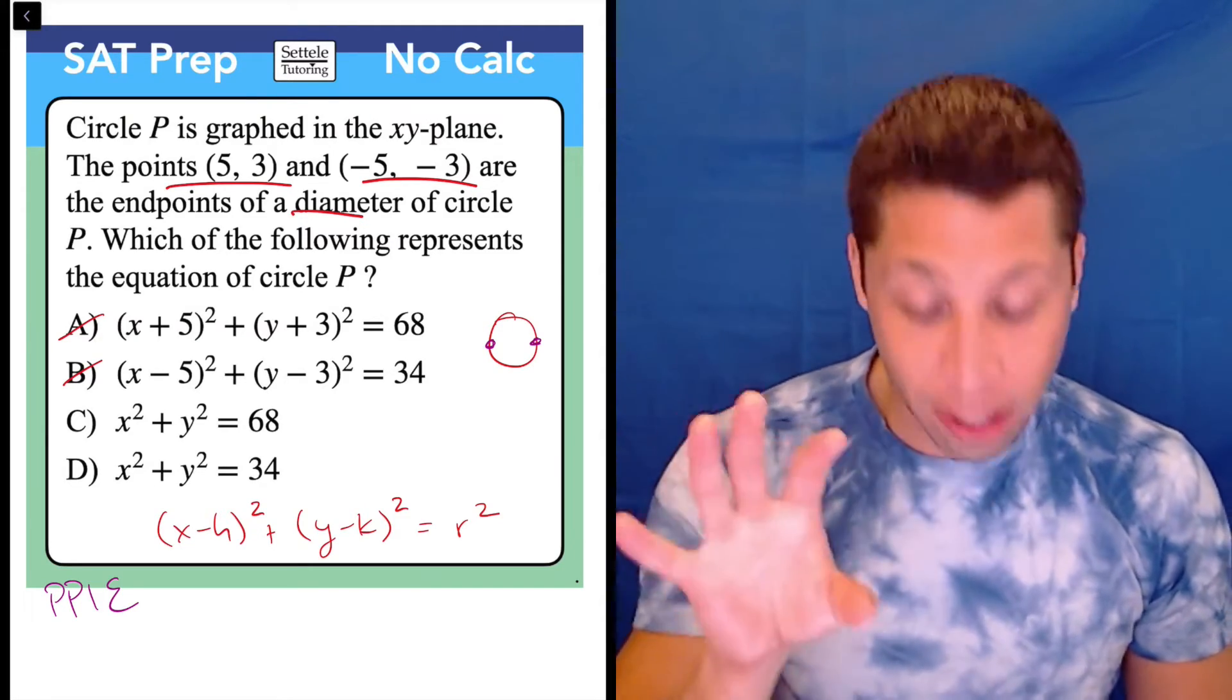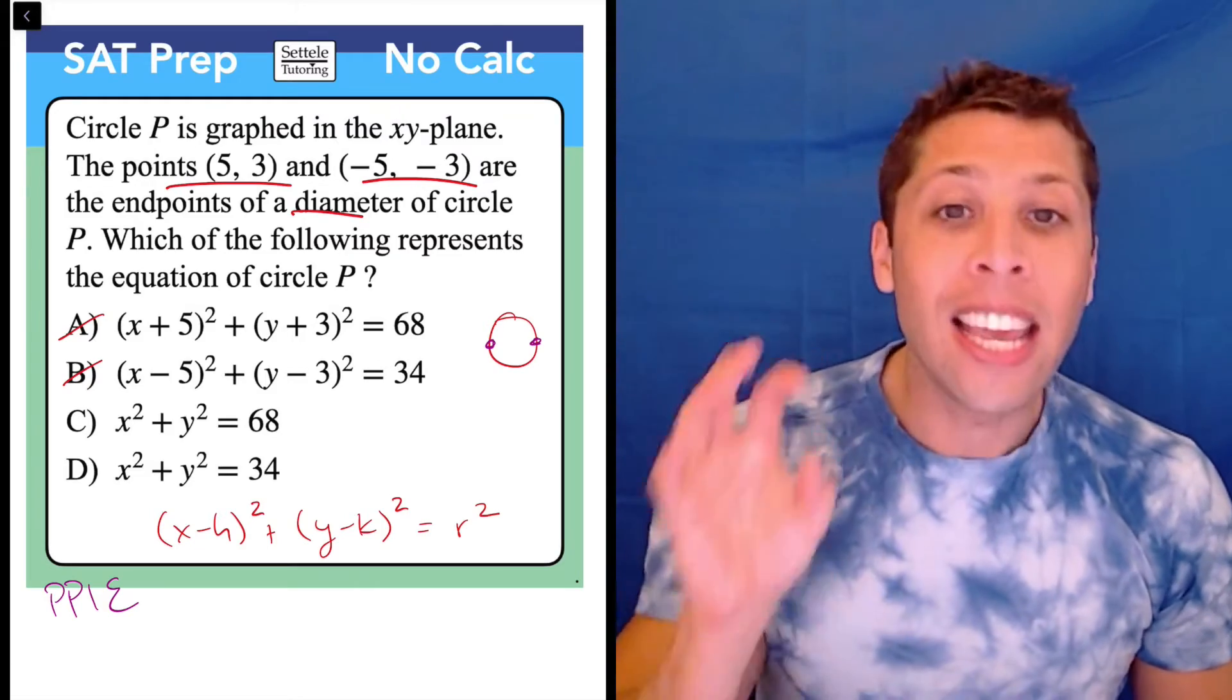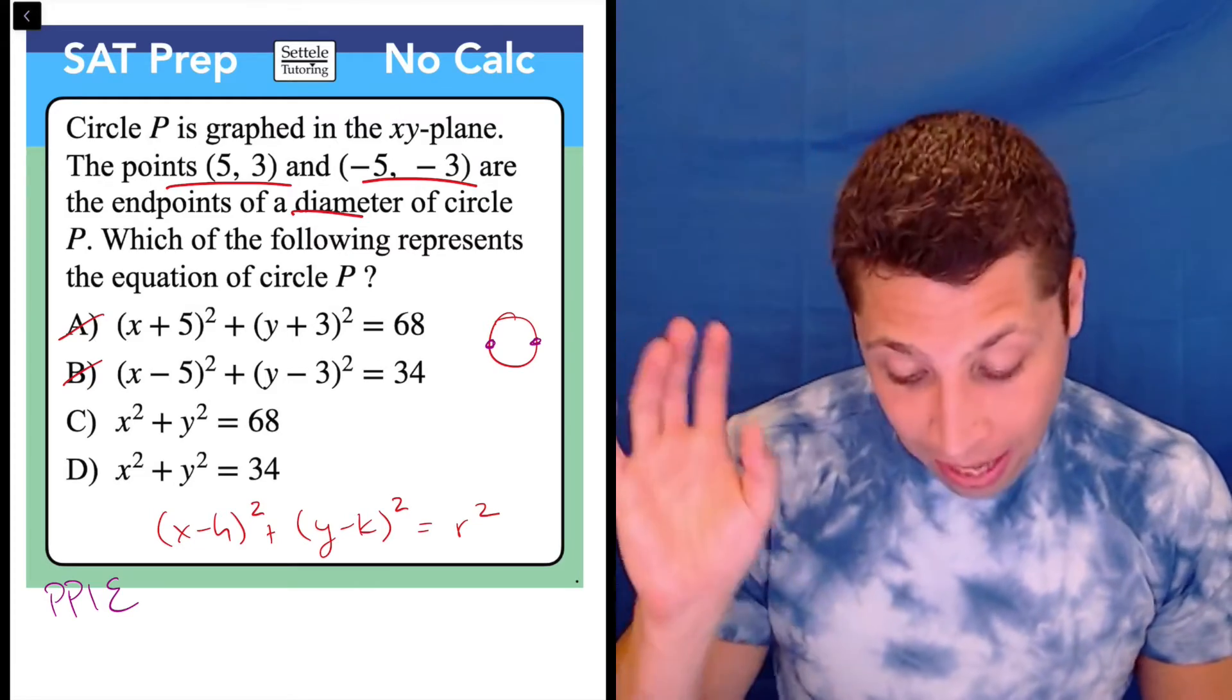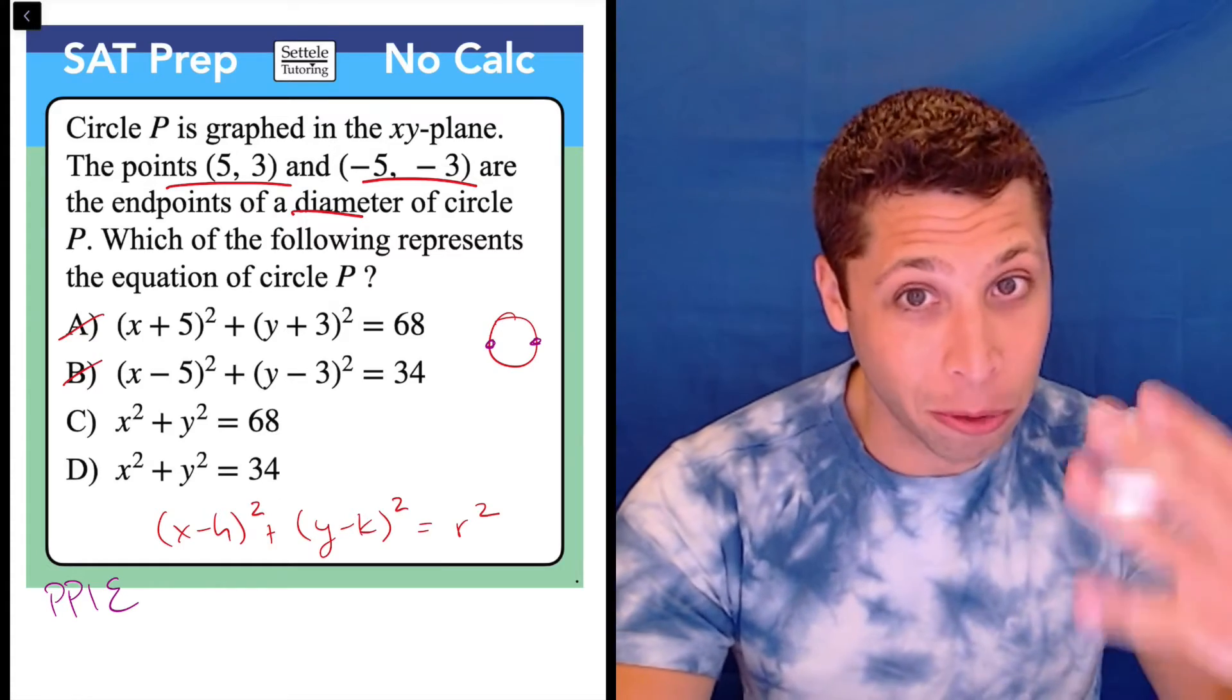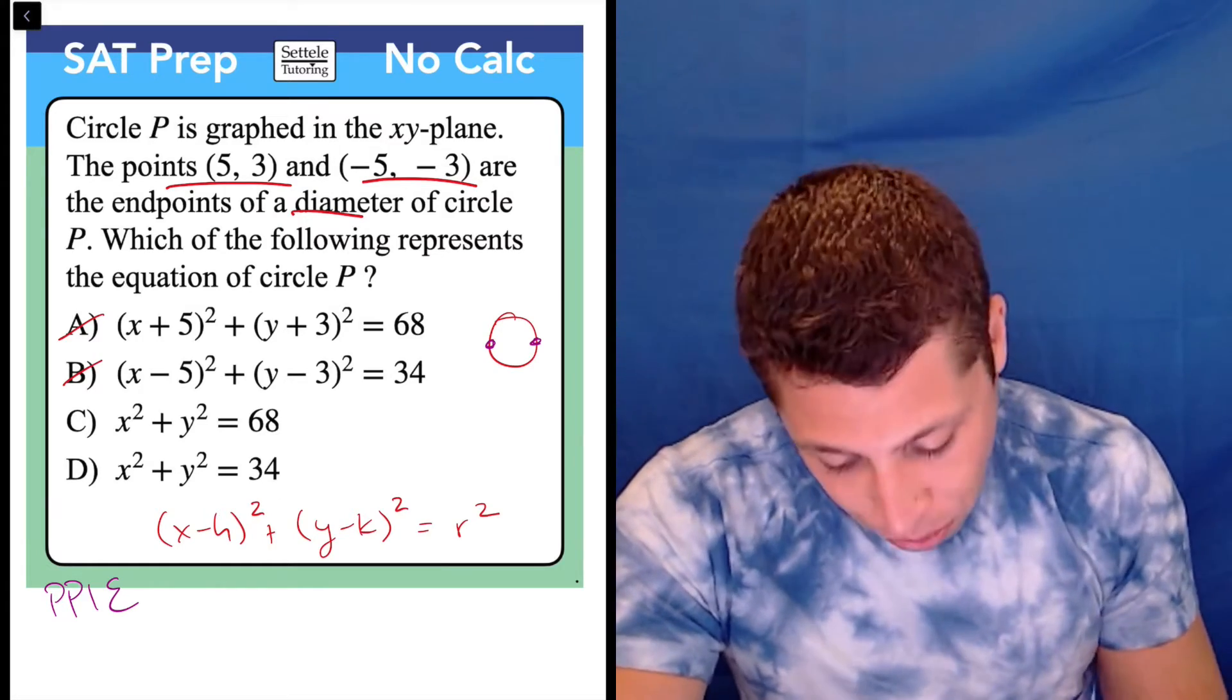That's going to tell us whether or not the circle equations in C and D include the points that were given in the question itself. I'm going to do the easiest point here, the one without the negatives, so 5, 3.